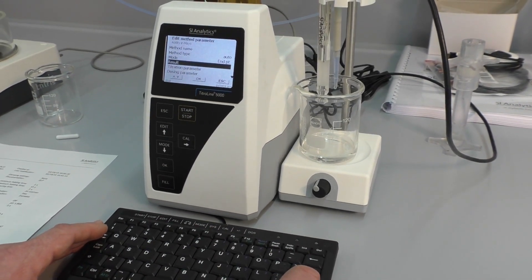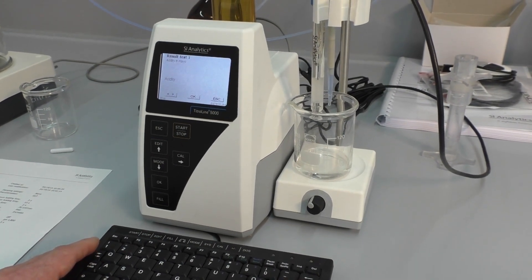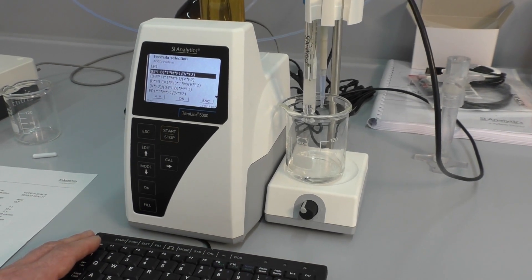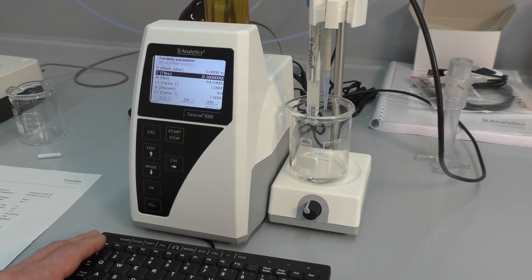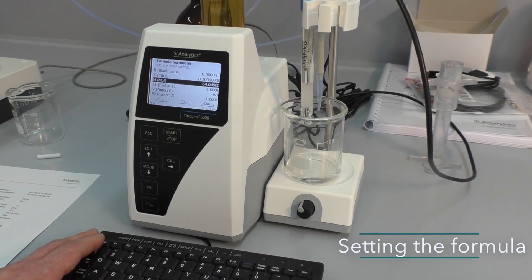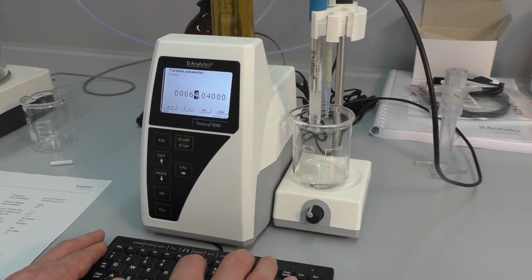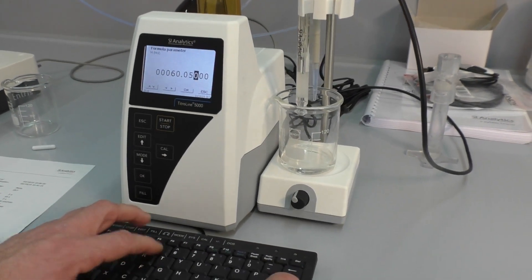Next step is we have to change the result calculation because the acidity is fine, but the formula bar has to be changed a little bit. Because now we have the molecular weight here, equivalent weight from citric acid, we will have to change it to the molecular weight of acetic acid.